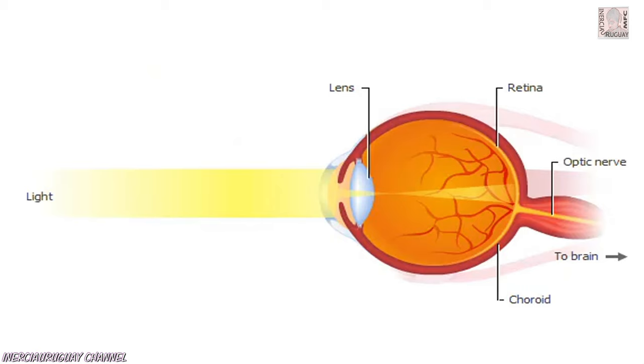Light passes through the lens and onto the retina in the back of the eye. The choroid attaches to the back of the retina and provides it with support and blood for nourishment. Light-sensitive cells in the retina produce electrical signals that travel along the optic nerve to the brain.